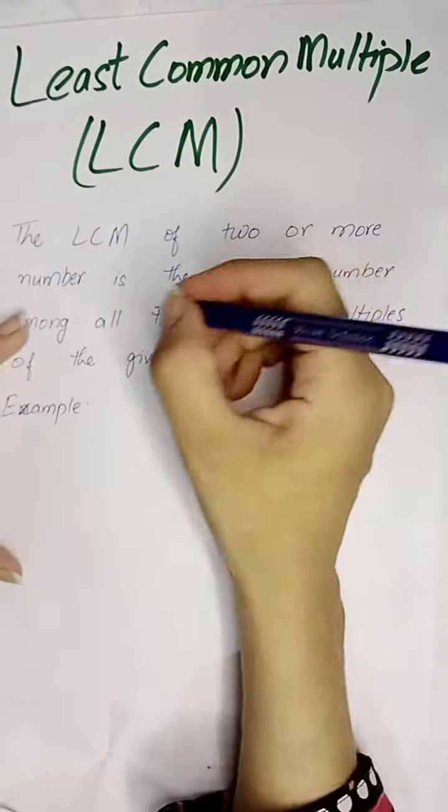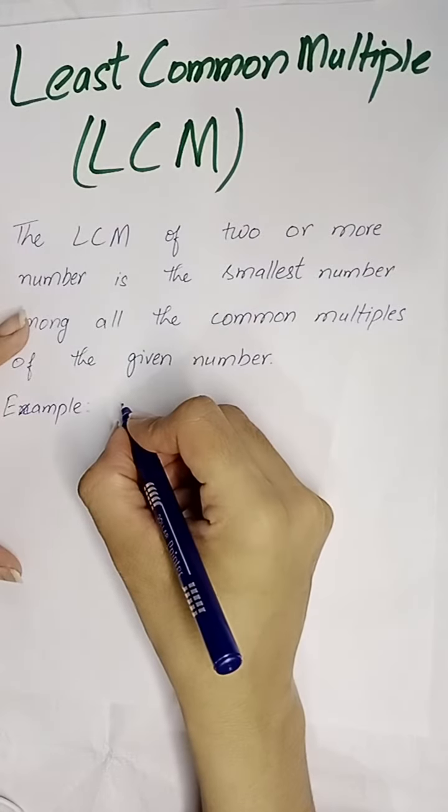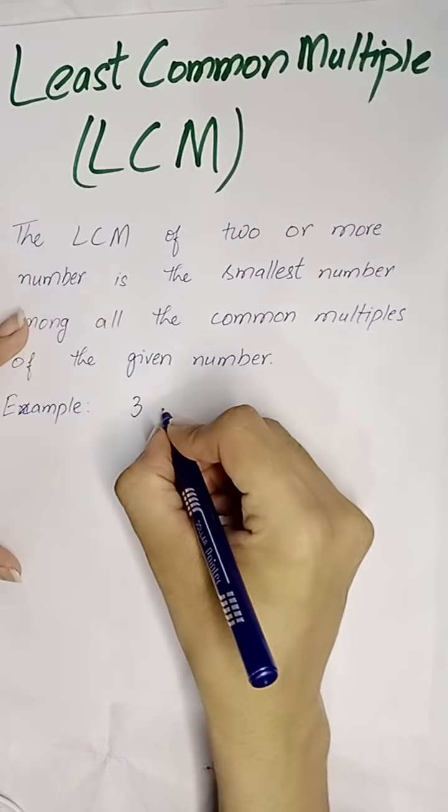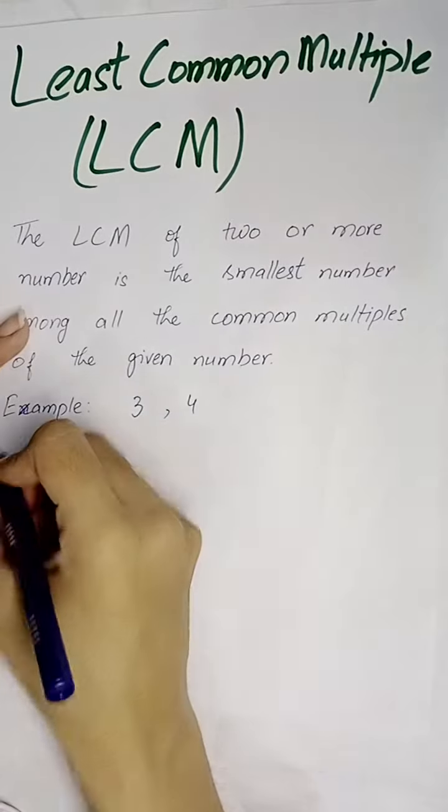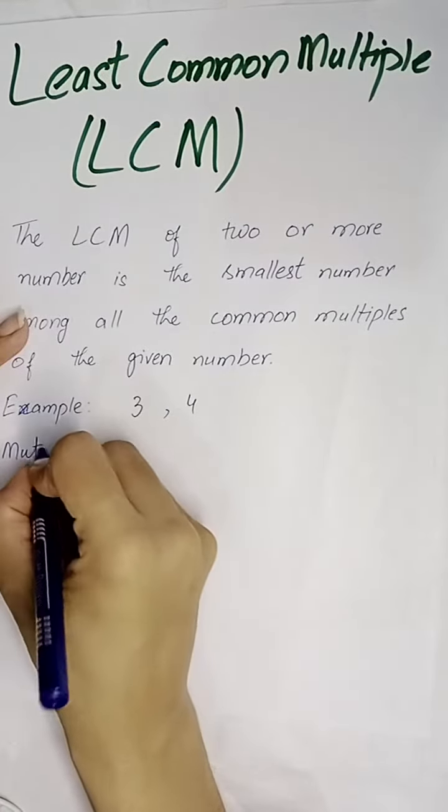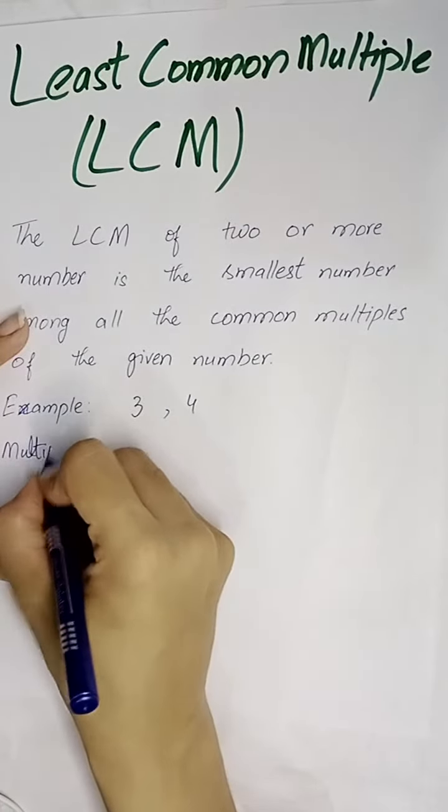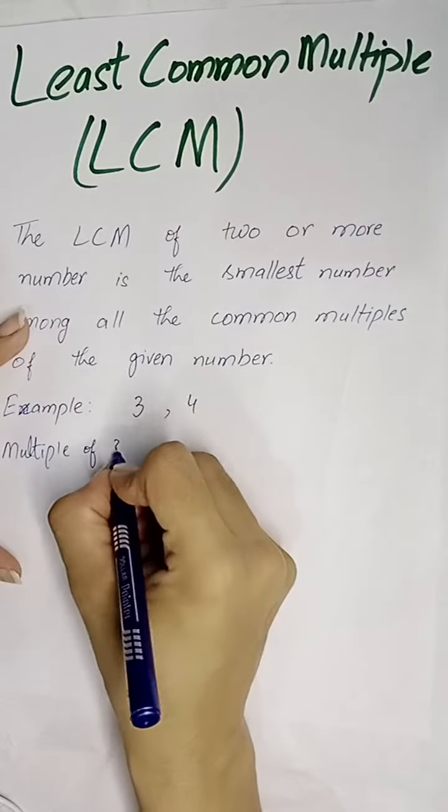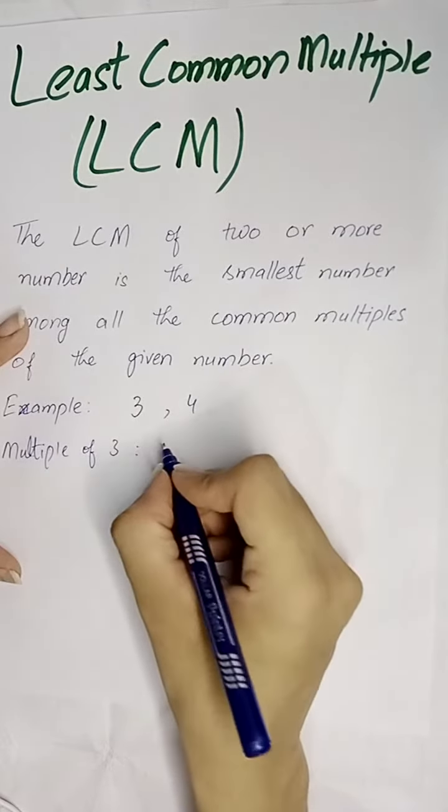Let's take two digits, 3 and 4. We have to write the multiples of 3.